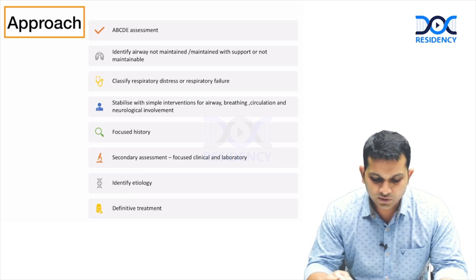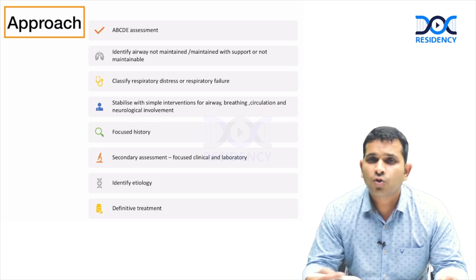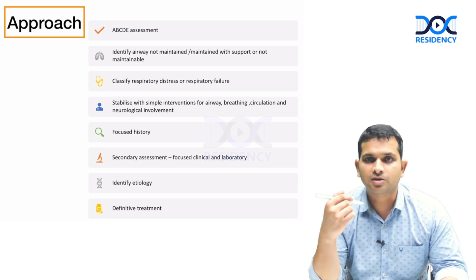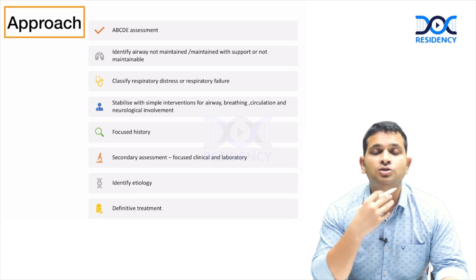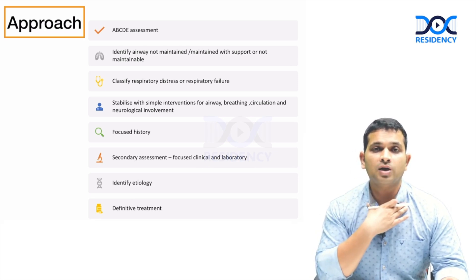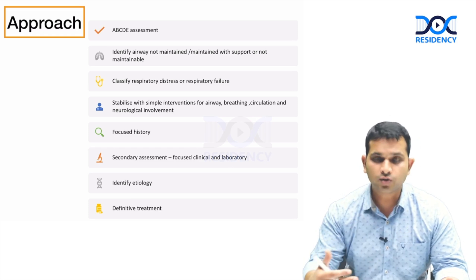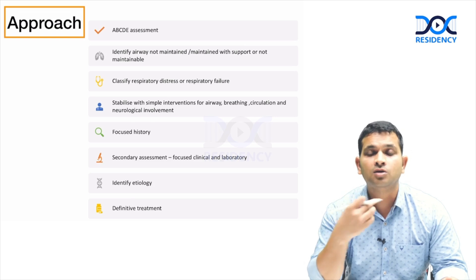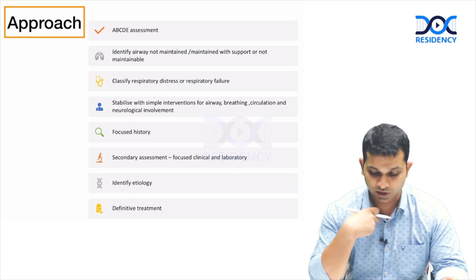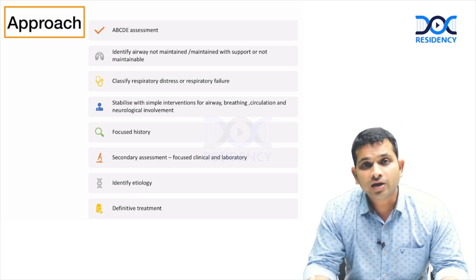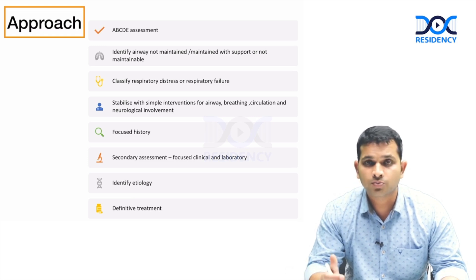When we talk about the respiratory system, we identify the airway: is it maintainable or not maintainable? This means: are they having supra-sternal, supra-clavicular, sternal, or intercostal retractions? Are they having stridor? These findings suggest upper airway obstruction. We then classify the work of breathing as mild, moderate, or severe — we'll discuss what each of those means.